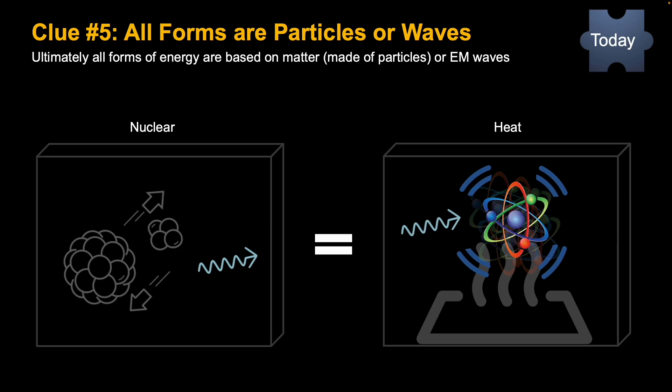An EM wave can cause the vibration of atoms. And what is heat? Heat is exactly that—it's the vibration of atoms. So nuclear energy, heat energy. Again, there are boxes drawn around all these because energy is always perfectly conserved.